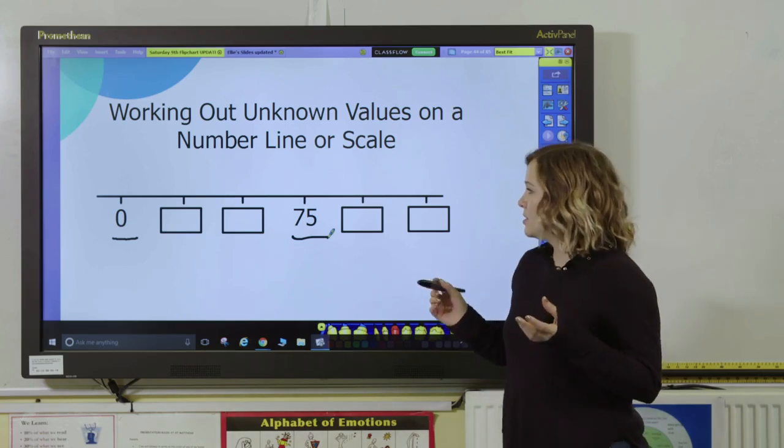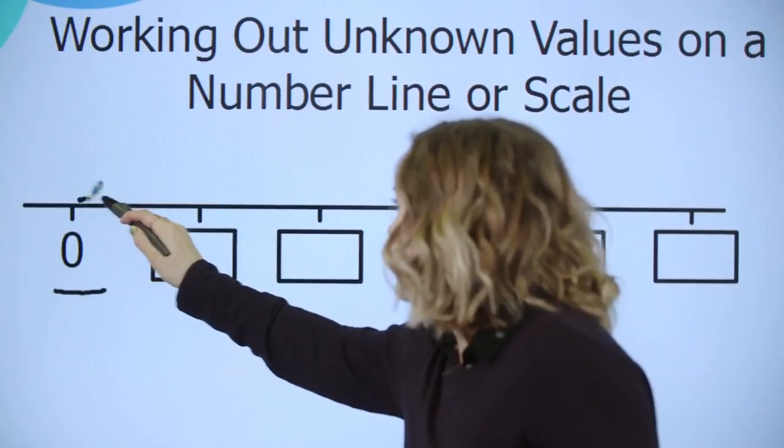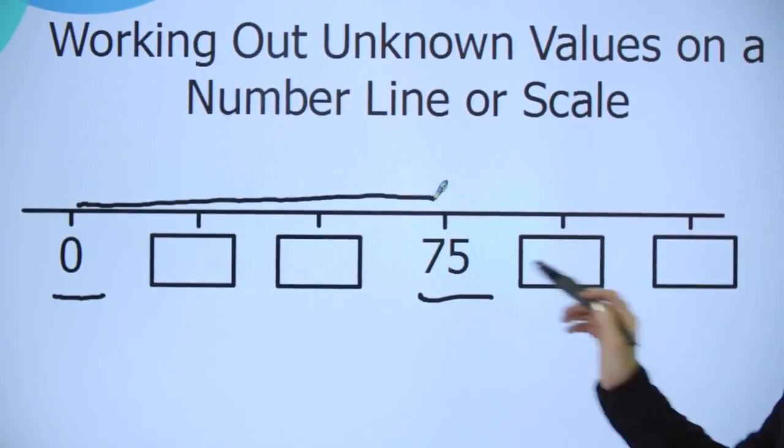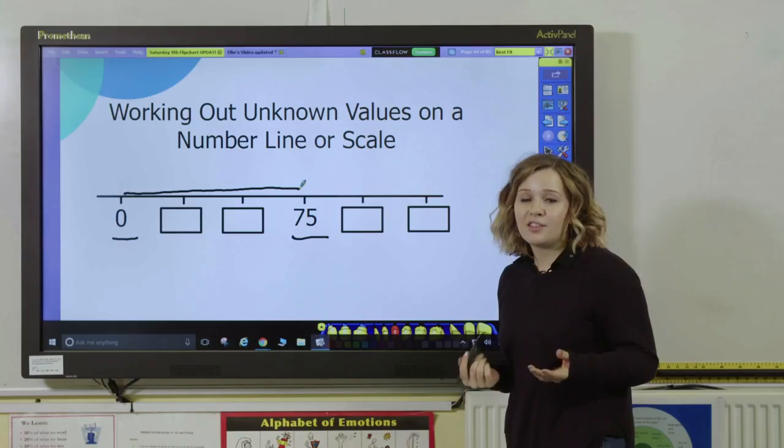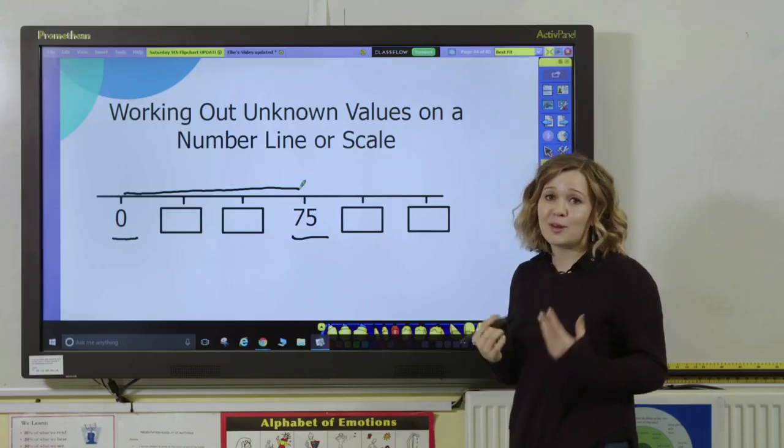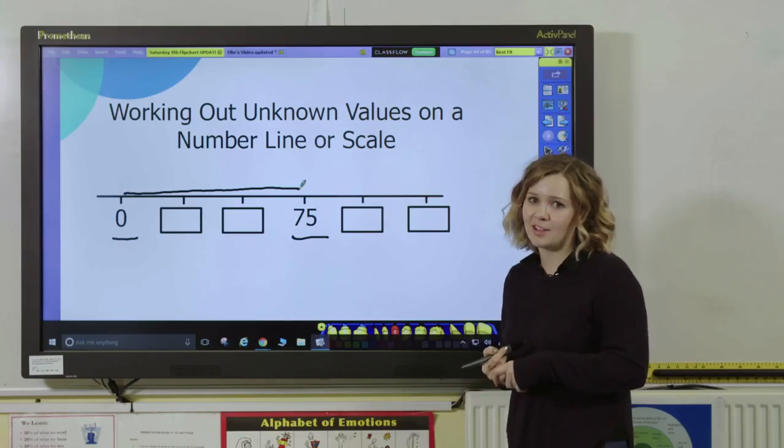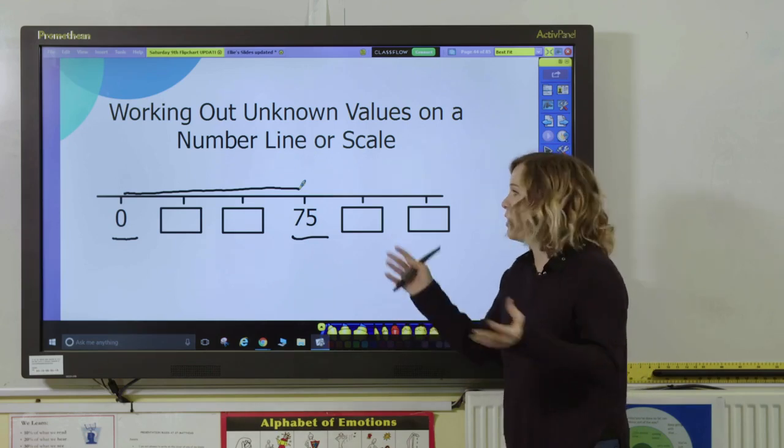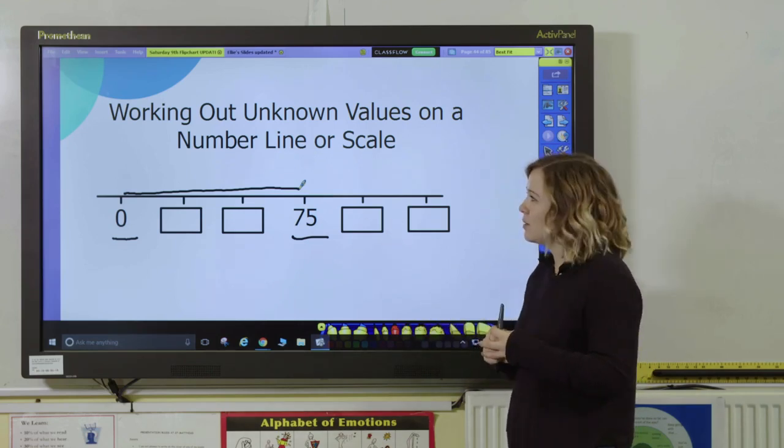So the first thing we want to do is think about what is the difference between these two numbers, 0 and 75, and hopefully pupils know that when you talk about difference you can use subtraction. So 75 take away 0 is 75. That's quite a nice easy one to start with.